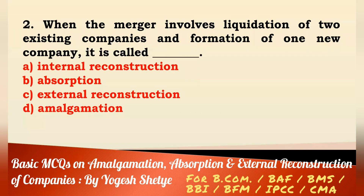Question 2: When the merger involves the liquidation of two existing companies and formation of one new company, it is called — internal reconstruction, absorption, external reconstruction, or amalgamation? Answer: It is called amalgamation. Answer D.